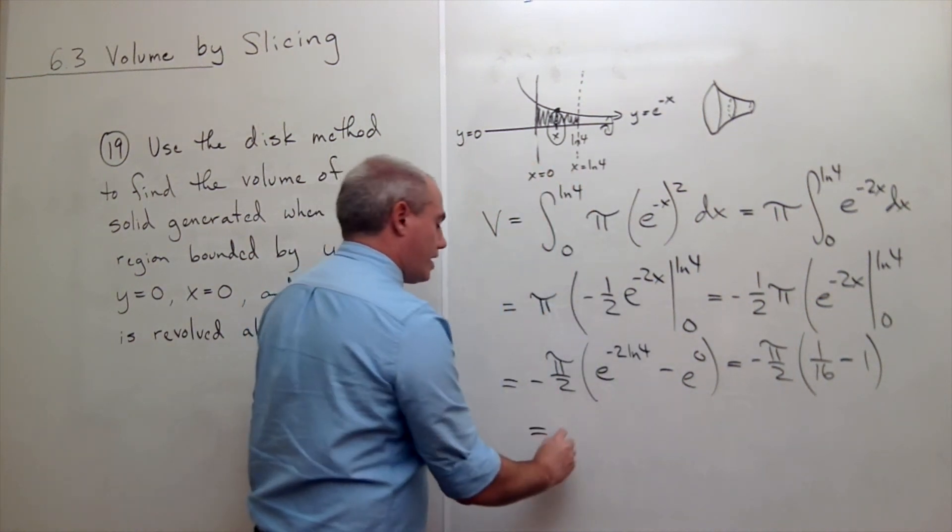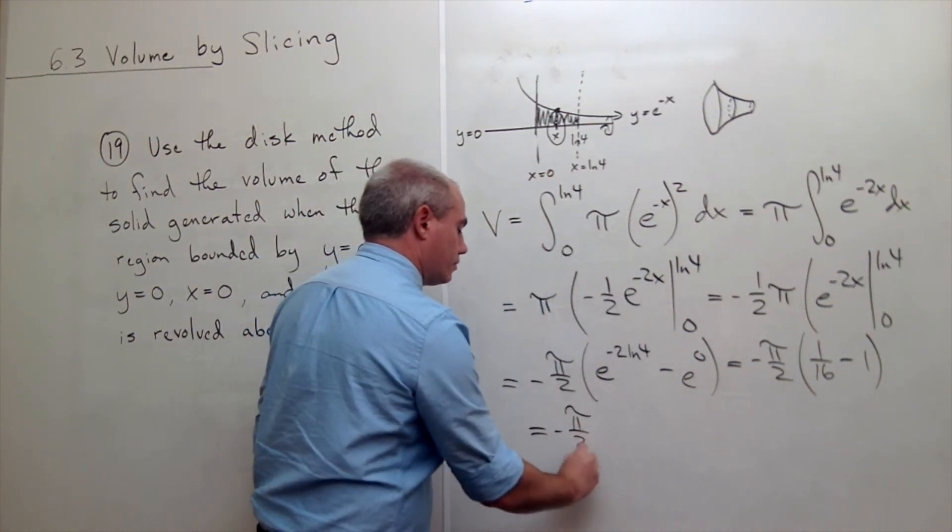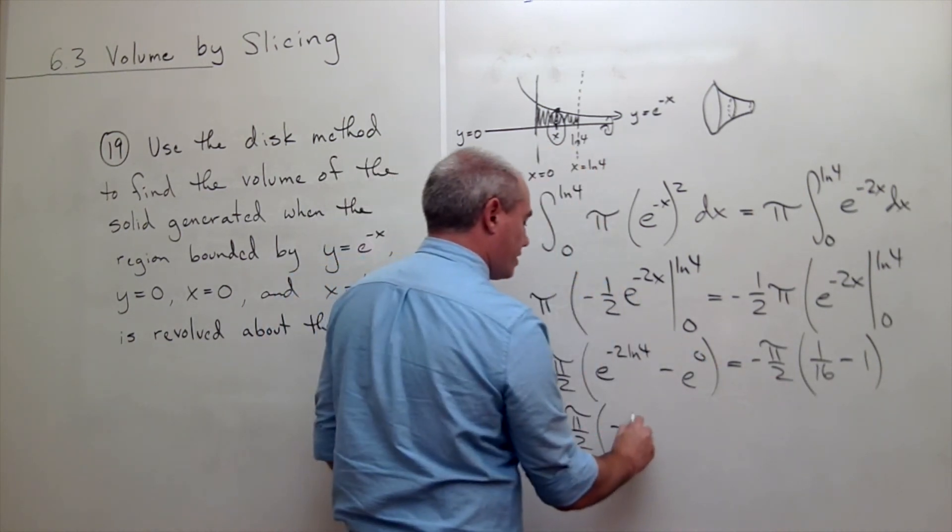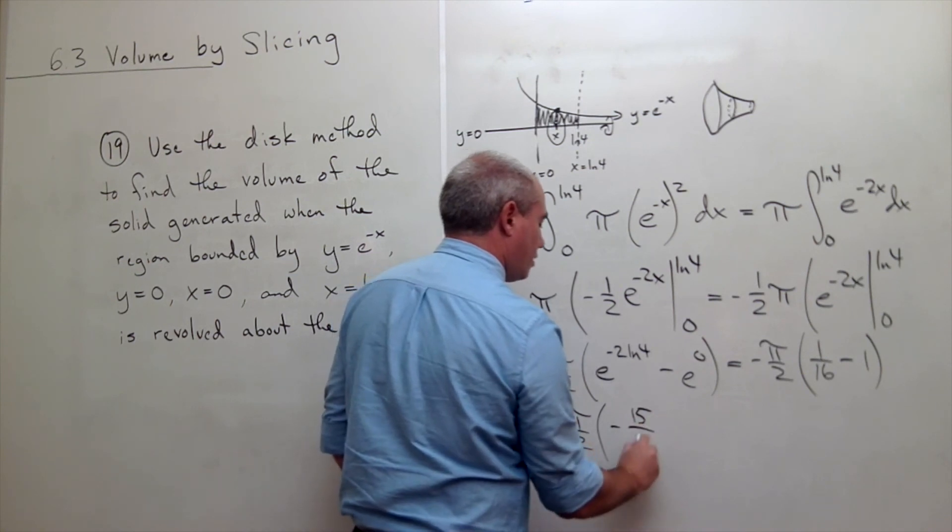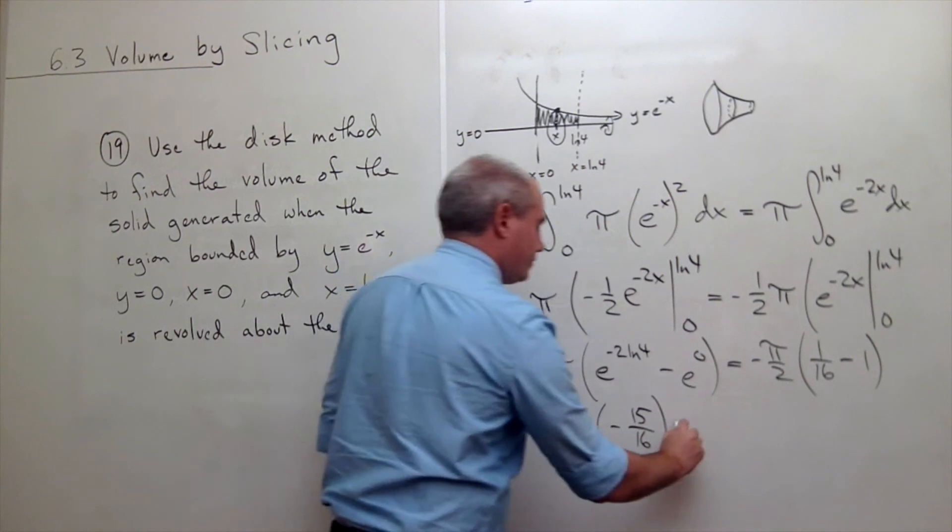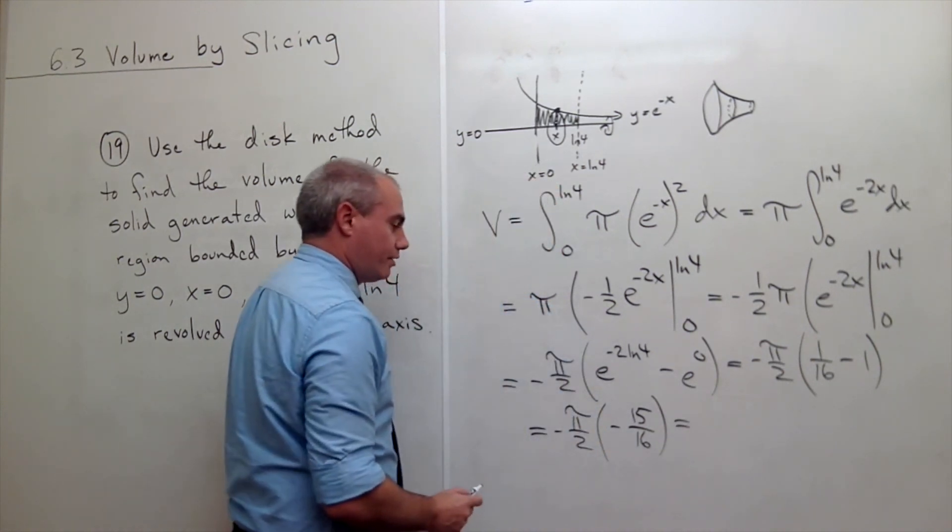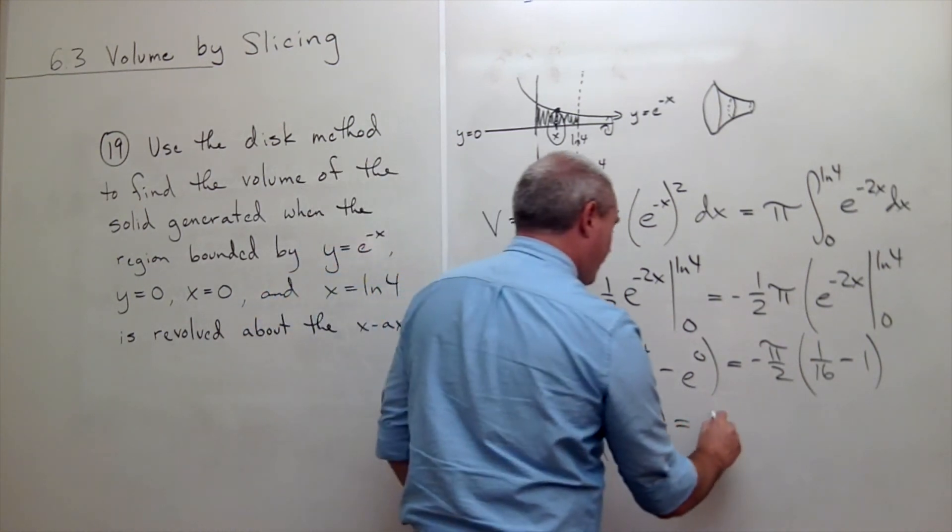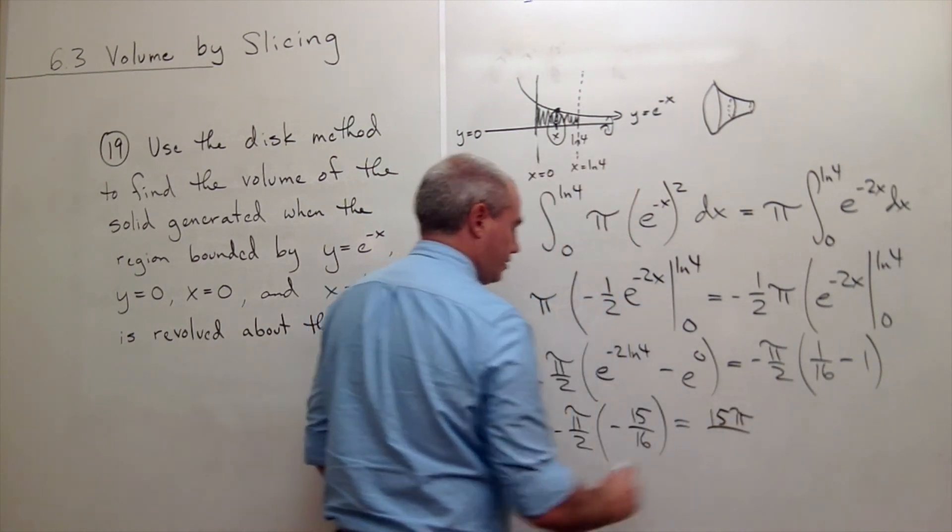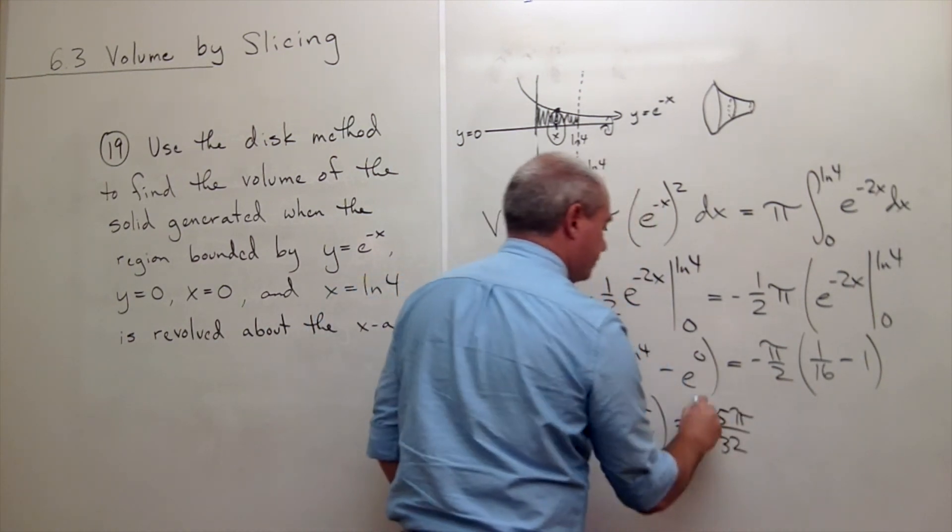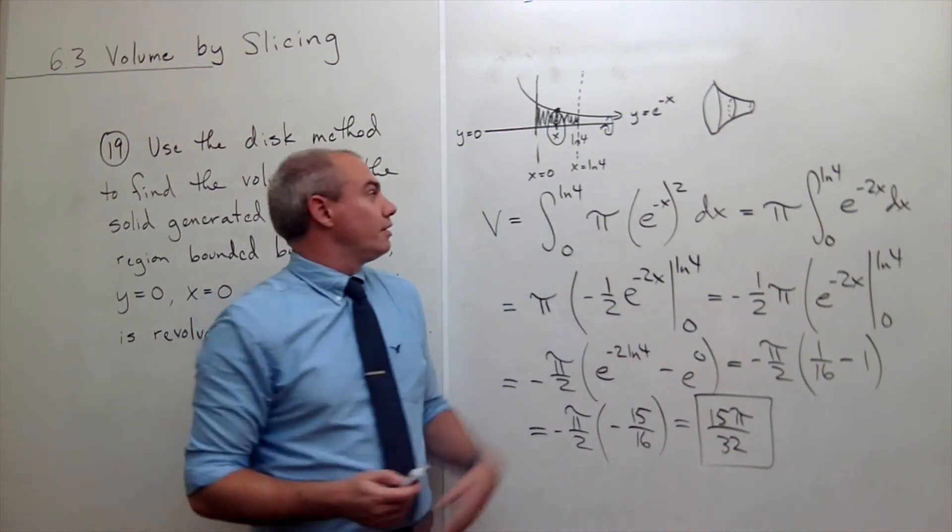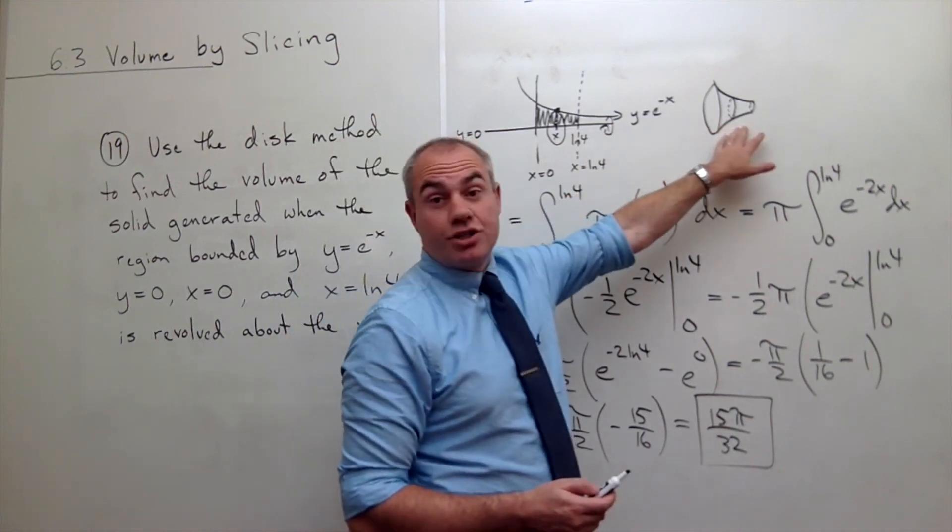So I've got negative pi over 2 times 1 16th minus 1, which is otherwise known as negative 15 over 16. The negatives cancel, and I'm just left with 15 pi divided by 32. So that's how many units cubed of volume would be in this shape.